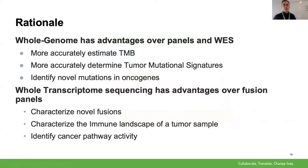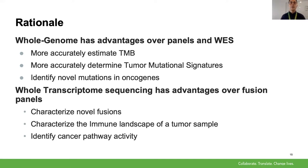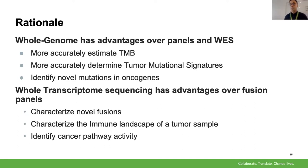Why is a smaller panel perhaps not the best approach? With whole genome sequencing, we can more accurately estimate tumor mutation burden and determine tumor mutation signatures, which are important in a variety of cancer types. We can also identify novel mutations in oncogenes not found in smaller panel exons, including mutations in promoters and regulatory regions. For whole transcriptome sequencing, we can characterize novel fusions, the immune landscape of a tumor sample, and cancer pathway activity.